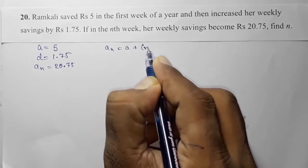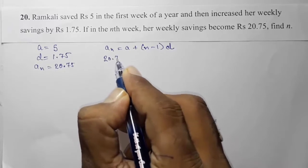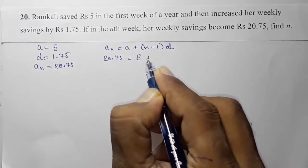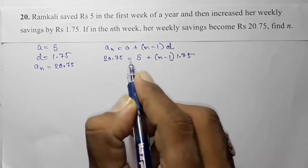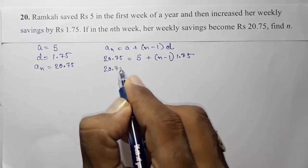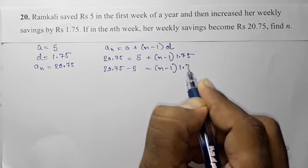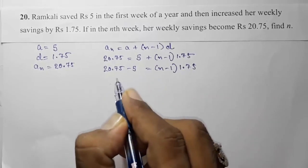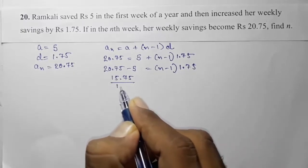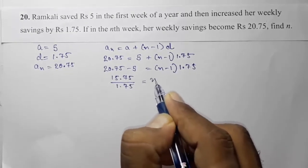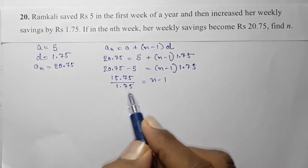We want to find n, using an = a + (n−1)d: 20.75 = 5 + (n−1)×1.75. Subtracting 5 from both sides: 20.75 − 5 = 15.75 = (n−1)×1.75. Dividing both sides by 1.75: 15.75 / 1.75 = n − 1. Students often make mistakes in this type of division, so let's work it out carefully.